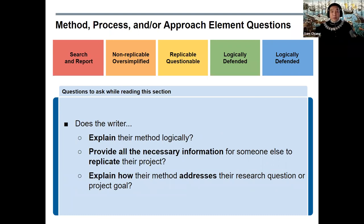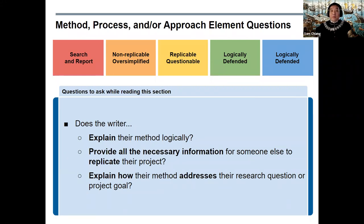Now let's consider the method, process, and/or approach element. This part of the paper is crucial, so consider each question carefully. Does the writer explain their method logically? Does the writer provide all the necessary information for someone else to replicate their project? Does the writer explain how their method addresses their research question or project goal? Remember, their logical explanation should include references to how they developed or arrived at their method.